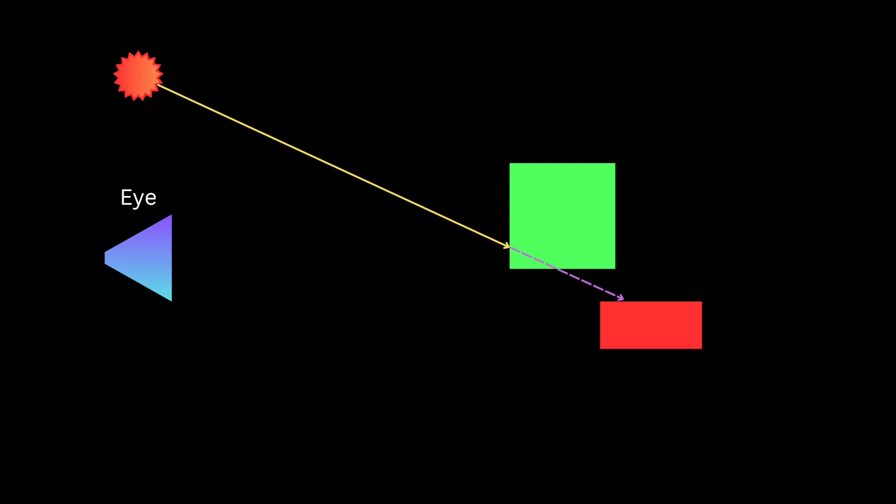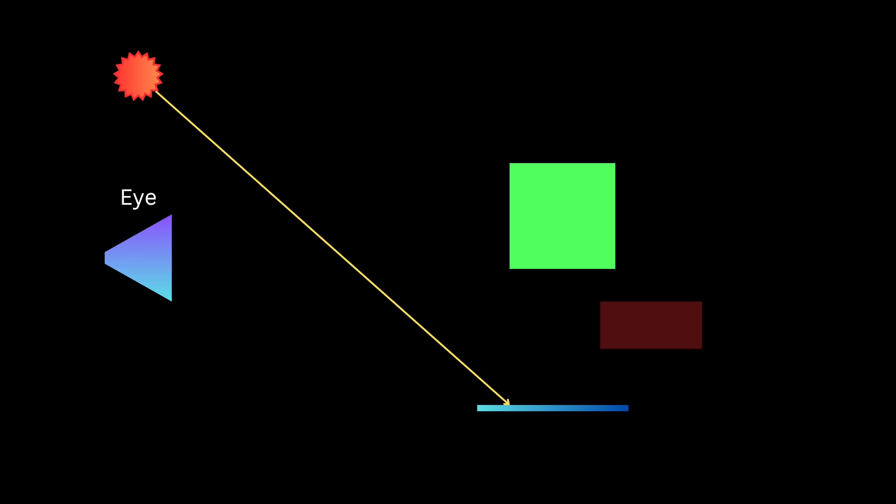For an object in shadow, light simply won't reach it. We'll still see the object because of ambient or indirect light that has bounced from other objects. Now let's say we have a mirror: light from the source hits it, gets reflected, hits a point, bounces back, and hits your eyes — and you see the reflection of an object in the mirror. If you're a physics student, don't take all of this at face value — this is an oversimplification.